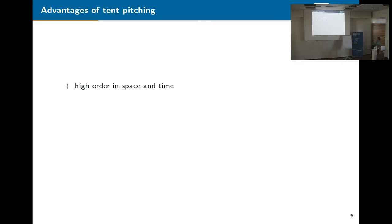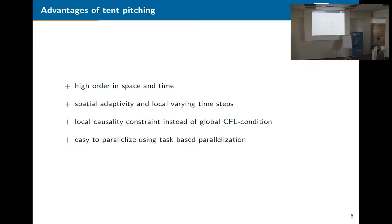Okay, so tent pitching itself, as I said, it's high order in space and time, depending on the method you apply. So there are various ways to do this. It has a quite natural way to use spatial adaptivity. You have local varying time steps depending on material parameters or the mesh size. Instead of the global CFL, which we would have in a standard time stepping regime, we have a local causality constraint, which speeds up the code quite a bit. And as I said before, it's easy to parallelize using task-based parallelization. So we build dependency graphs and then we just set the number of cores we want to use and let it run.